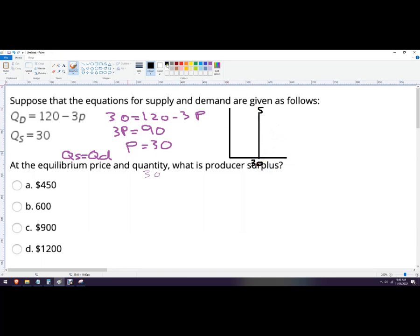The demand function is going to be something that looks like this. This is demand. Okay, and we know that the price is 30.